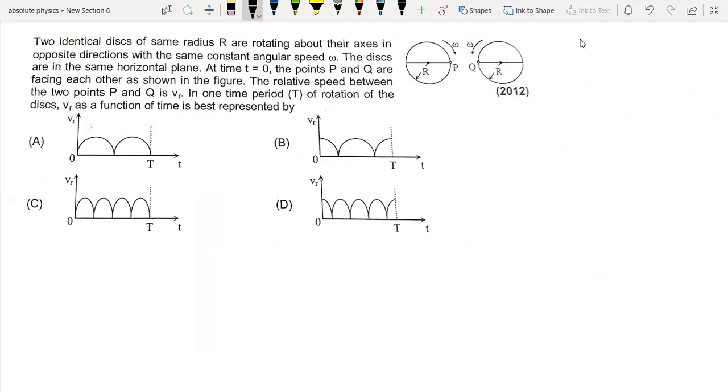Hello all my viewers, so today I'm going to solve this question from JEE Advanced 2012. The question is from rotation. Two identical disks of same radius R are rotating about their axis in opposite directions with the same constant angular speed omega.